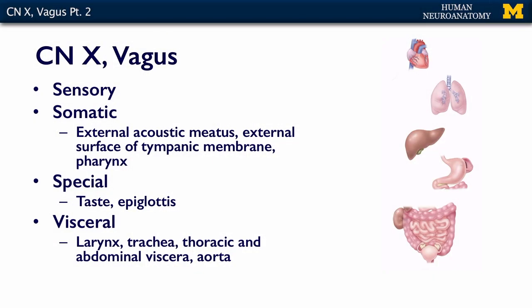The special component of the vagus is taste, and it's for areas within the pharynx and the epiglottis. This is not a really prominent area of taste sensation — most of it, of course, is going to be on your tongue — but there are a few taste buds back there, and cranial nerve 10, the vagus, is what's going to carry that information back into the CNS.